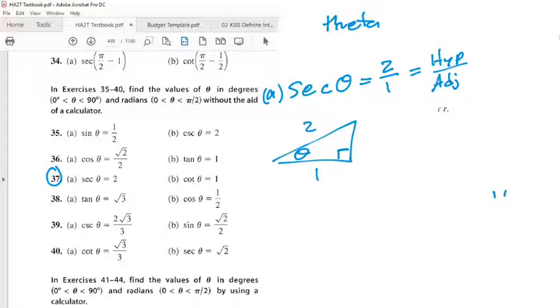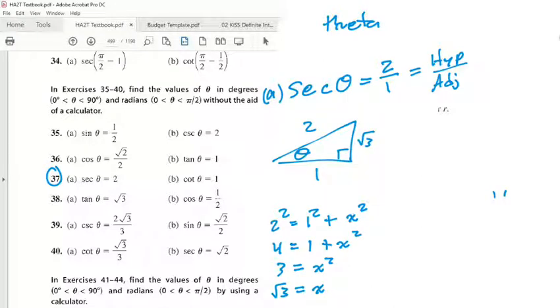Yes, Pythagoras. Two squared equals one squared plus x squared. So four equals one plus x squared. X squared equals three. So what is x equal? Does this look familiar guys?